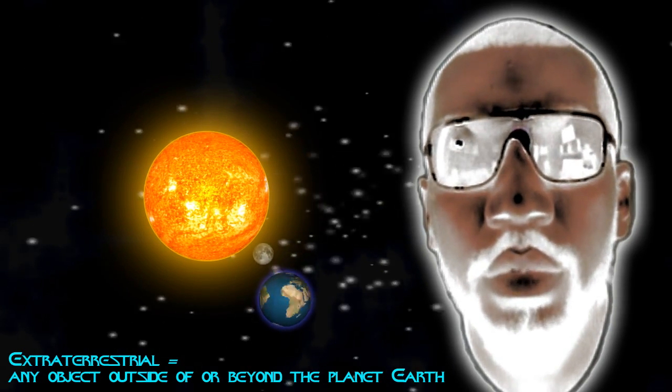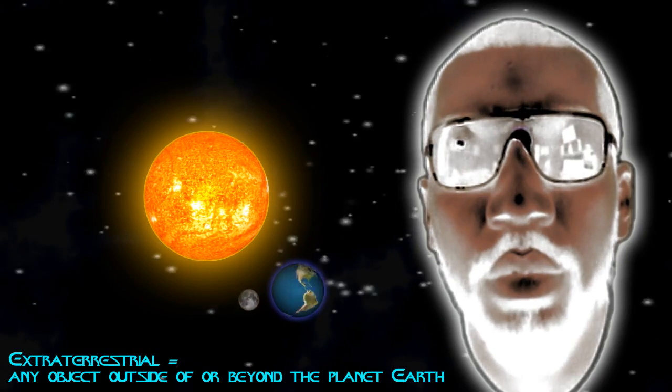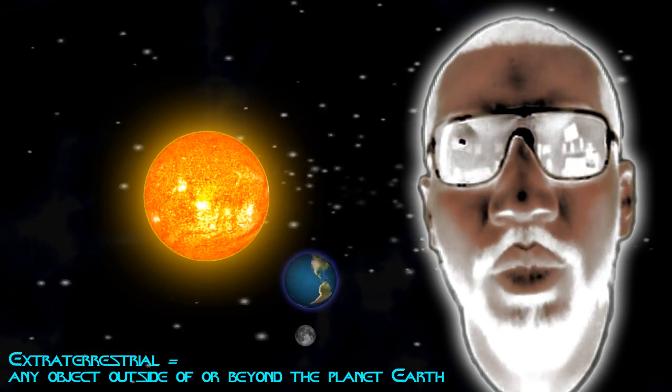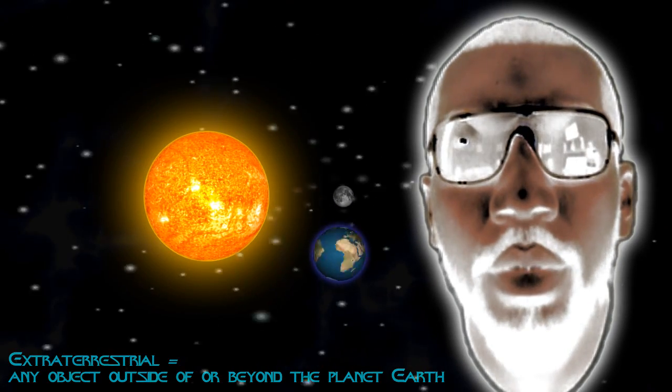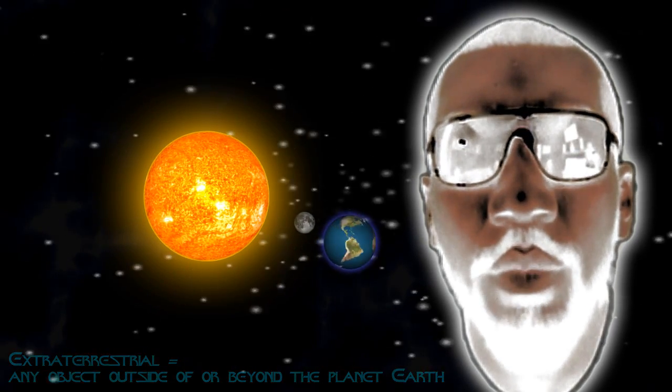Mercury, Venus, Mars, Jupiter, Saturn, Neptune, Uranus, all of these are extraterrestrials because they are outside of the planet Earth.